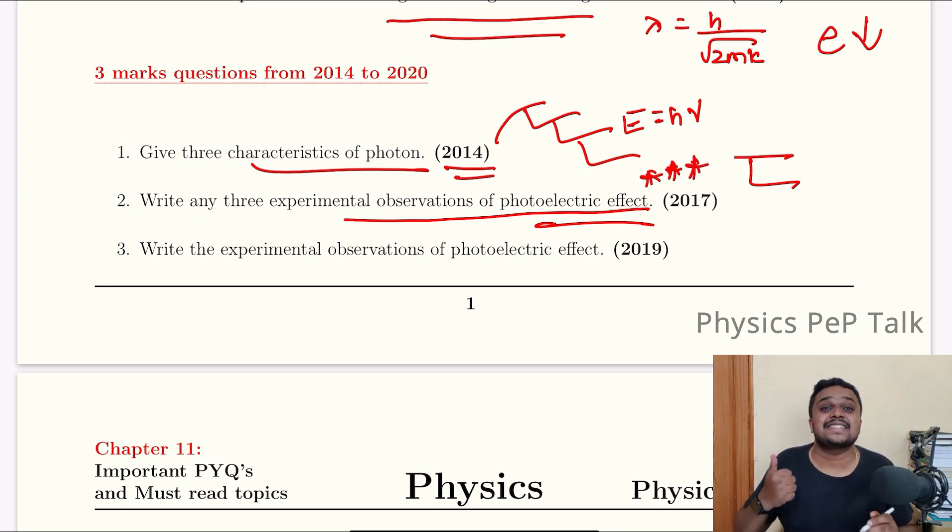For every photo sensitive surface there is a minimum threshold frequency below which no photo electrons are generated, and that minimum frequency is called threshold frequency. That's point number 2. The strength of the photoelectric current depends upon the intensity of the incident radiation. That is point number 3.